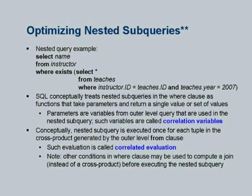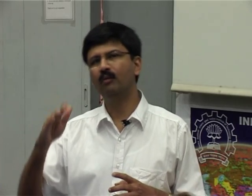In this particular case, a human could recognize that, well, why not just join instructor with teachers on instructor.id equal to teachers.id and teachers.year equal to 2000? Why not do the join? The optimizer may figure out that a hash join can be used, and that hash join probably does not do much random IO. So it may finish much faster than the plan which did the subquery per instructor. So the first line of attack is to take a nested subquery and turn it into a join, though we have to be careful.